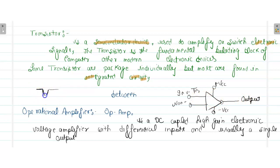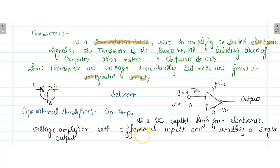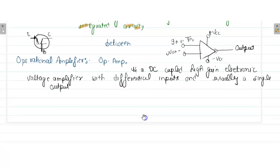A transistor has three terminals: the base terminal, the emitter, and the collector. The notation of the emitter and collector can be identified by the arrow in the schematic diagram.